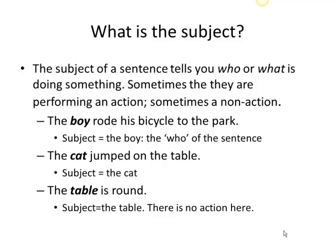In the first example, the boy rode his bicycle to the park. The boy is the subject and he's performing an action — he's riding his bicycle. In the second example, the cat jumped on the table. The cat is performing an action.